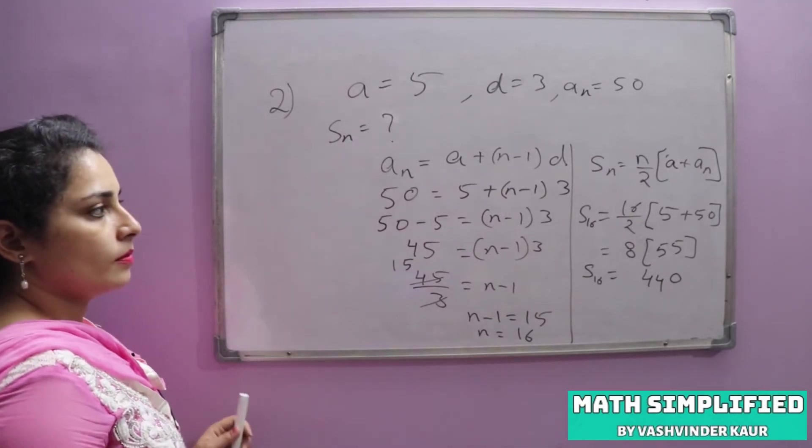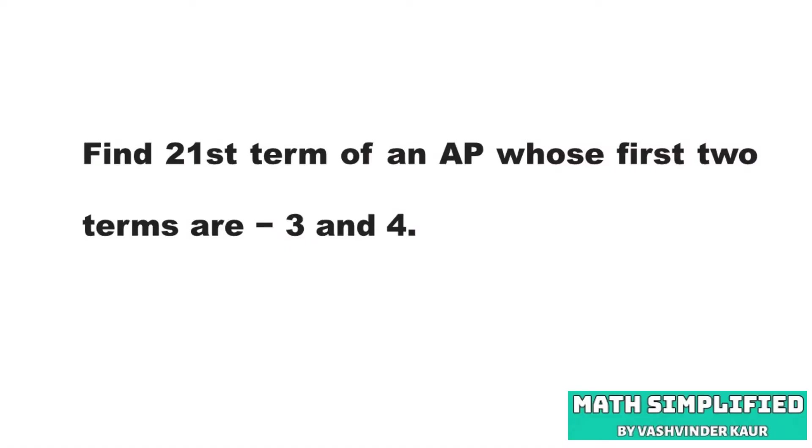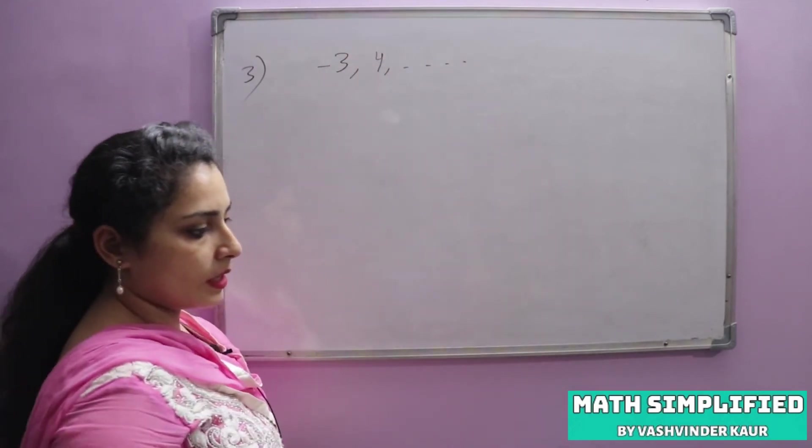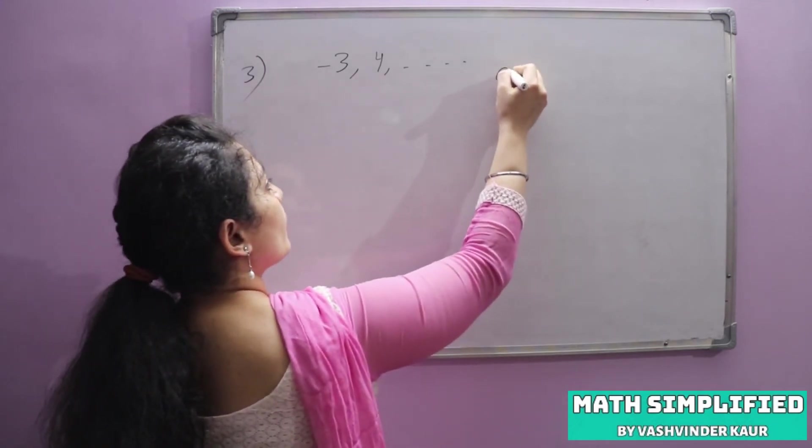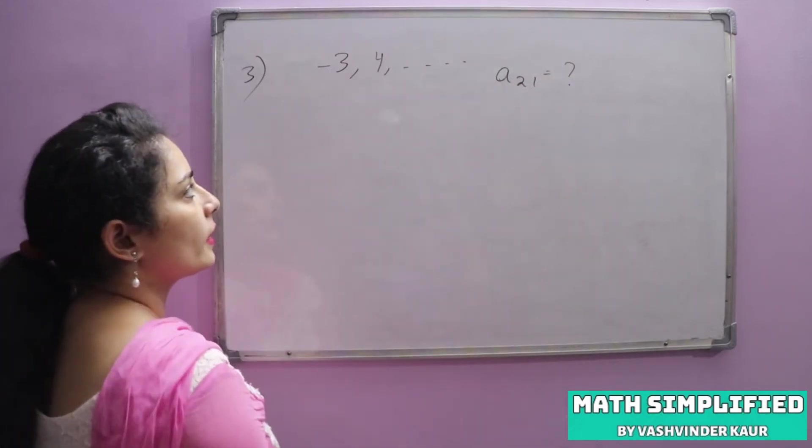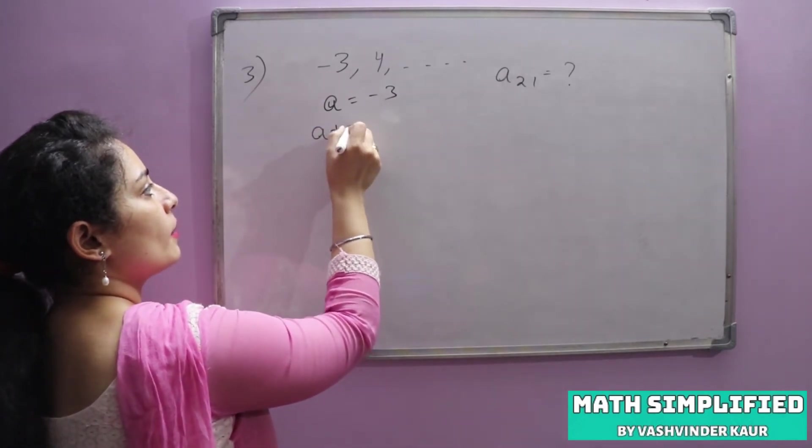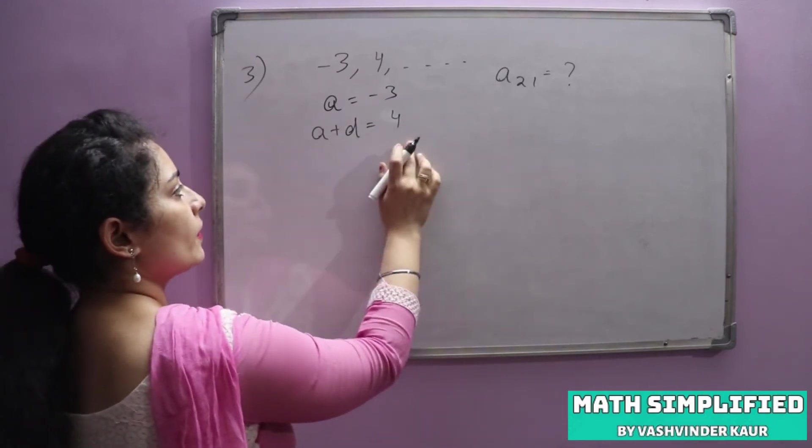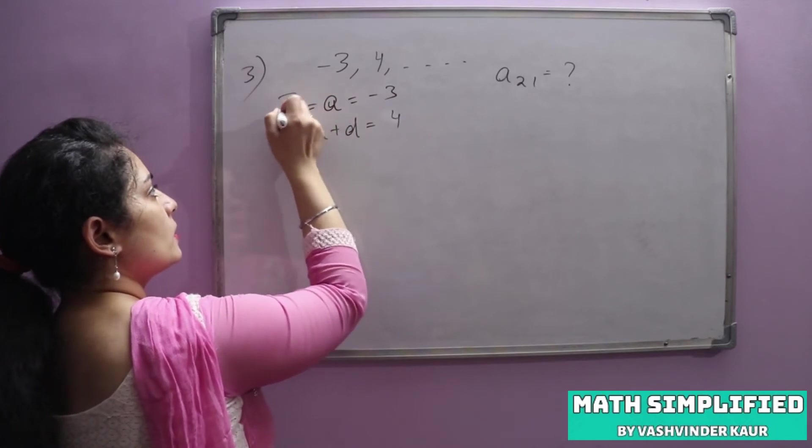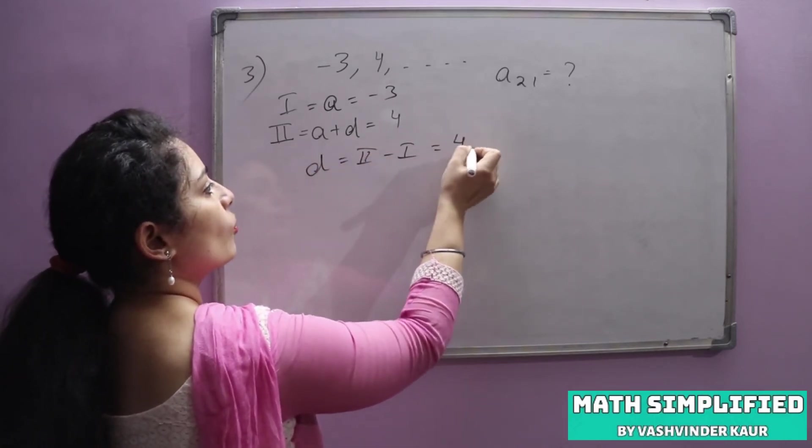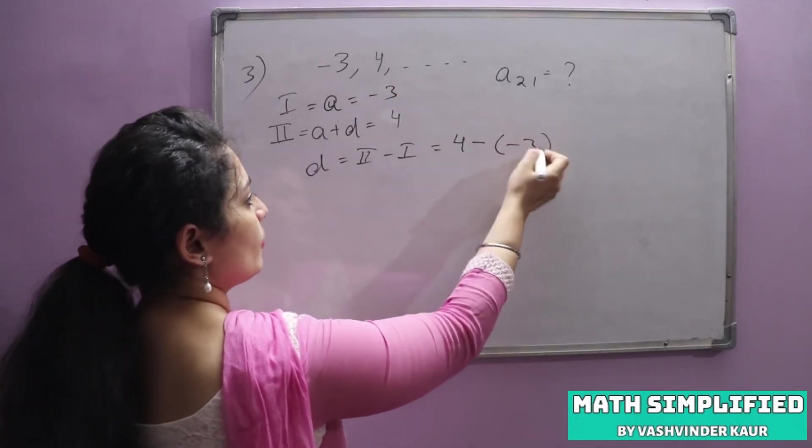Next we will do third question. Find 21st term of an AP whose first two terms are minus 3 and 4. We have to find A21. Sequence is minus 3 and a plus d is 4. Second term, we have to find d. Second term minus first term, so 4 minus minus 3, that's 4 plus 3, that is 7.